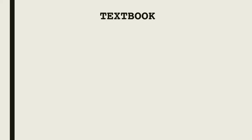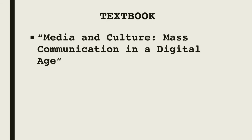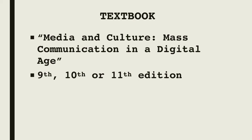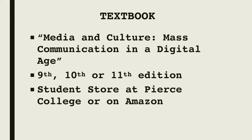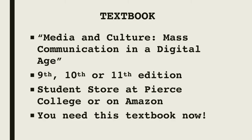The textbook is listed on the class syllabus. It's called Media and Culture: Mass Communication in a Digital Age. You may use the 9th, 10th, or 11th edition. There are copies available in the student store at Pierce College, but you may also find used versions on Amazon, and you can rent or buy digital versions. The syllabus has a link that will help you. You need this textbook right now, as you'll be reading three chapters per week, so don't delay.